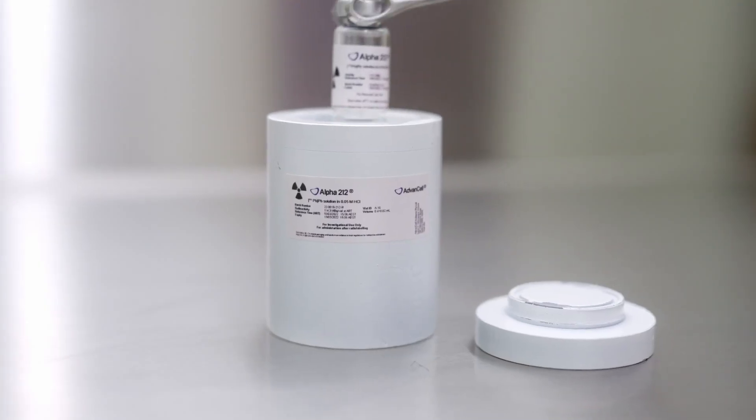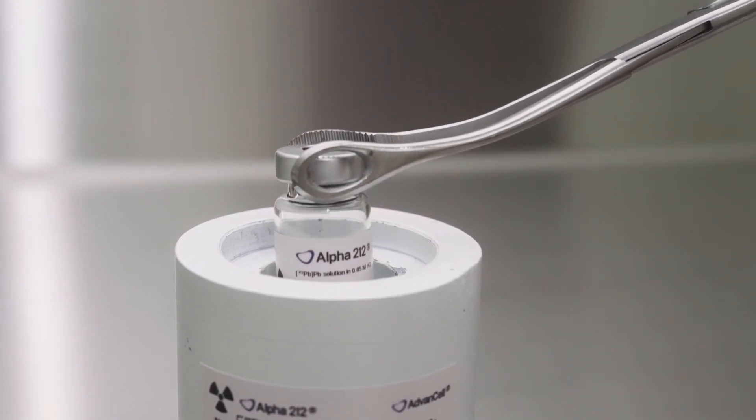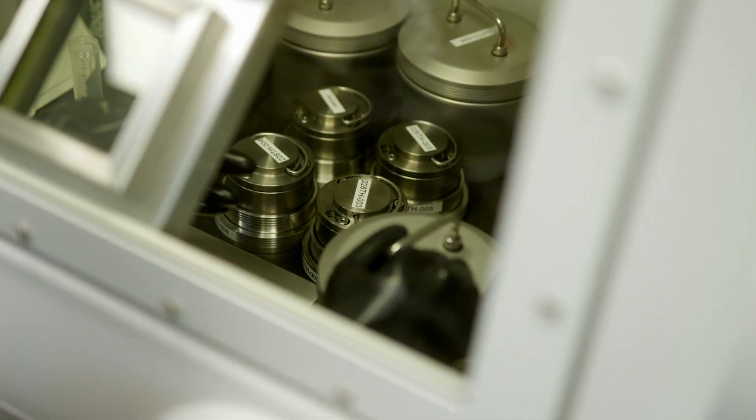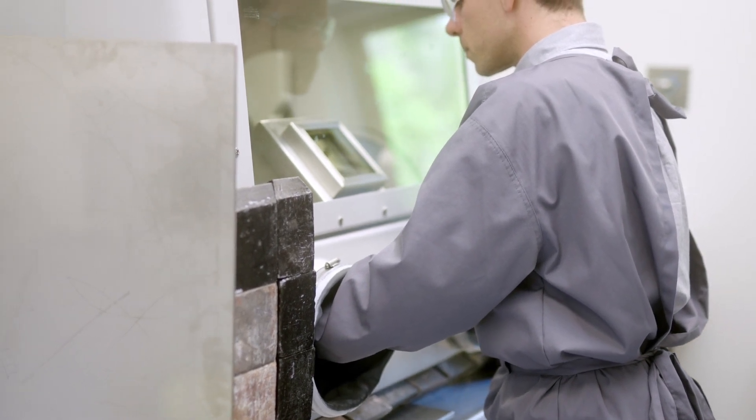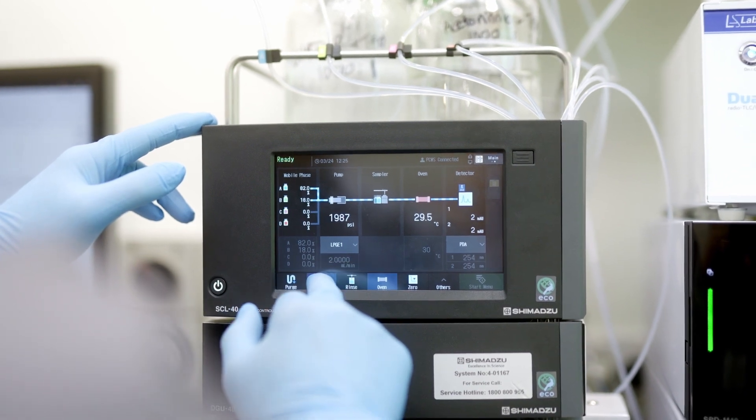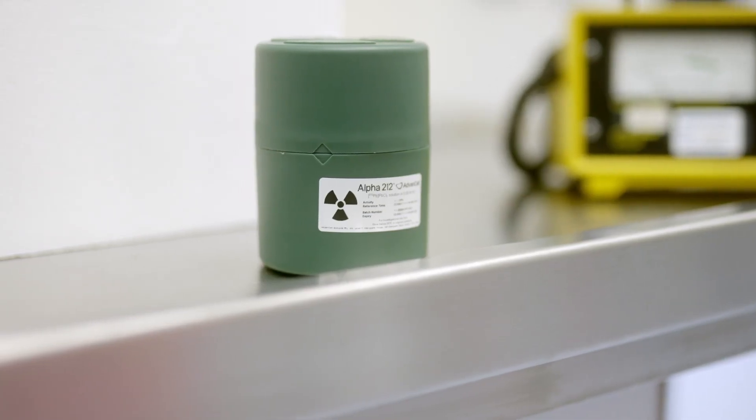Lead 212 was an attractive alternative to actinium-225. It has fewer daughters and therefore the radiation is likely more localized to the cancer. It has a shorter half-life, and potentially it can be more easily produced.